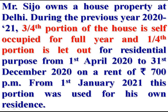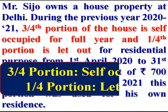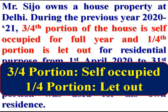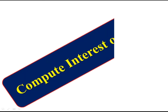The speciality of this problem is that three-fourth portion of the house is self-occupied for full year and one-fourth portion is let out. The house is divided into two units. We have to compute income from house property separately for these two units — firstly for the three-fourth portion which was self-occupied, then for the one-fourth portion which is let out. However, in this question there is a common expense of interest on loan, so first we compute interest on loan.